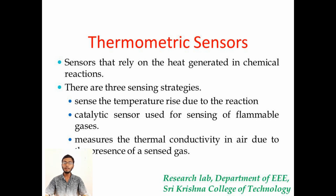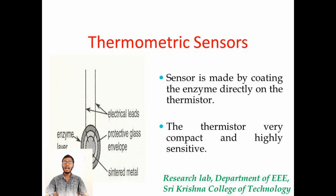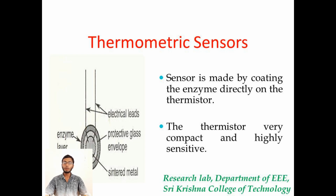The thermometric sensor consists of a thermistor, which is a highly sensitive compound used for measuring heat change. The thermometric sensor is coated with an external enzyme over a thermistor. There are two electrical beads, a protective glass envelope and a stint metal. The enzyme layer is present between the protective layers.